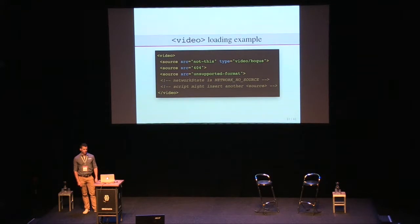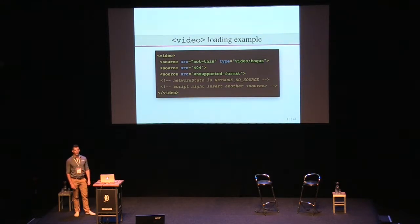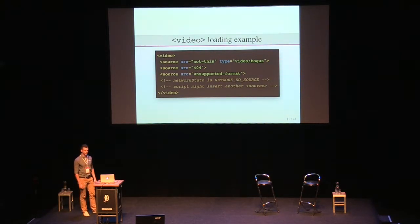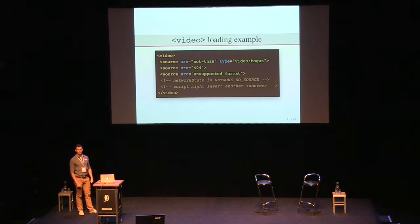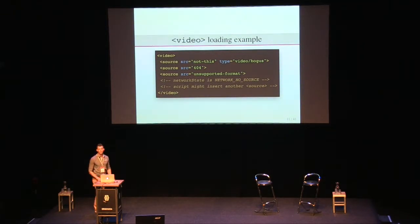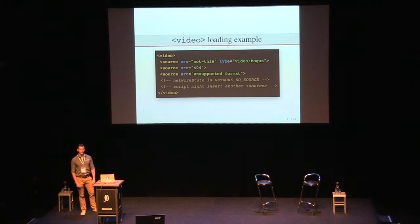First, an example for video. Media elements — that is video and audio — try each source element in DOM order. It starts at the top and checks: do I support this source element? It first looks at the attributes specified. In this case, it has a bogus type attribute, so it skips to the next source element. That one only has a src attribute, so the browser tries to download that resource and play it. If it gets a 404, it cannot be played, but the algorithm doesn't stop there — when it realizes it can't play the resource, it tries the next source element. This makes the selection algorithm asynchronous, giving JavaScript opportunity to change the DOM while this is happening.